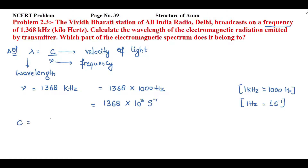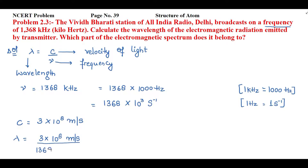The velocity of light c — you have to remember the value — is 3 into 10 raised to power 8 meter per second. Now let's put the values: lambda equal to c, that is 3 into 10 raised to power 8 meter per second, divided by 1368 into 10 raised to power 3 second inverse. The second inverse cancels with seconds.